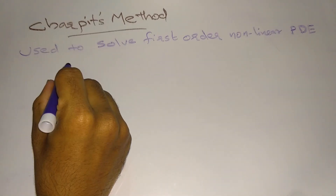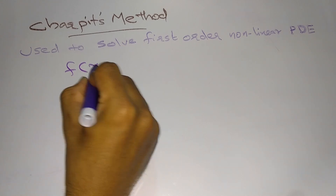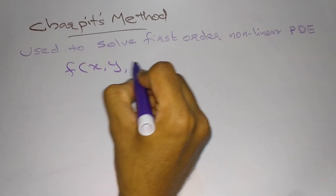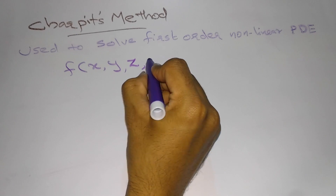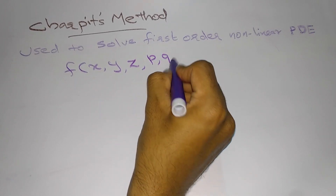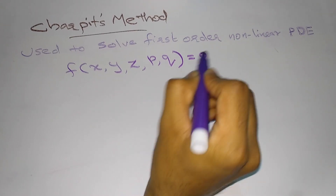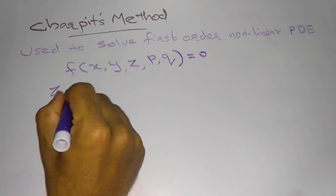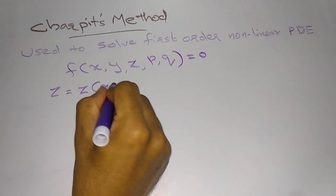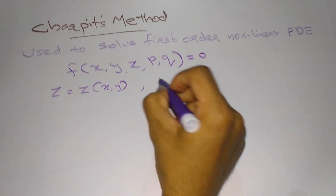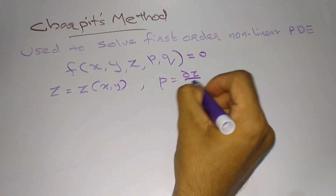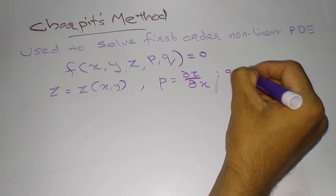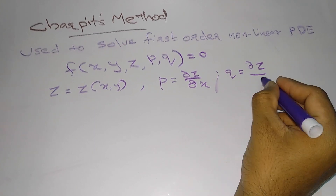A first-order nonlinear partial differential equation has the form f(x, y, z, p, q) = 0, where z is a function of x and y, p = ∂z/∂x, and q = ∂z/∂y.